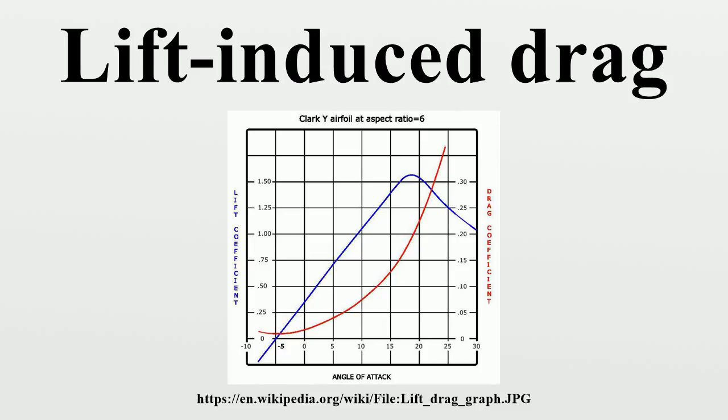AR is the aspect ratio, CDi is the induced drag coefficient, CL is the lift coefficient, Di is the induced drag, e is the wingspan efficiency value by which the induced drag exceeds that of an elliptical lift distribution, typically 0.85 to 0.95.